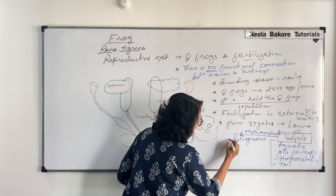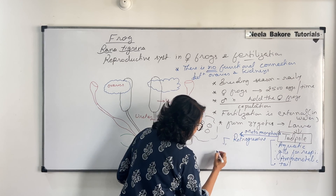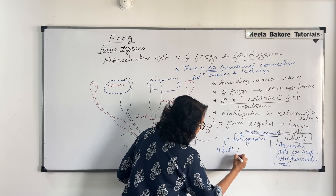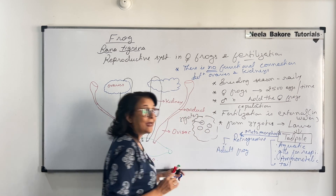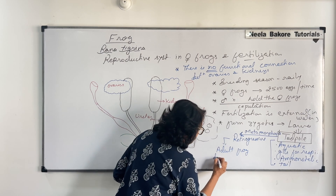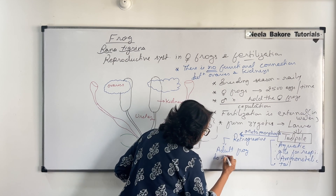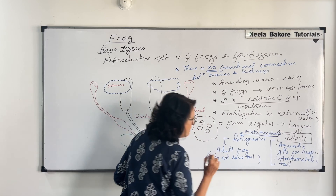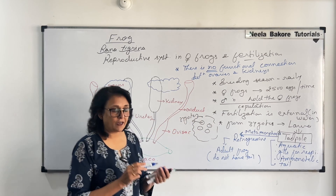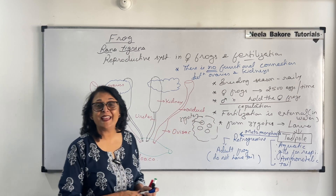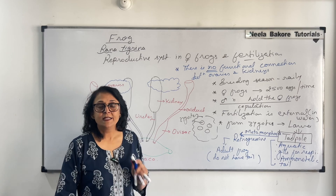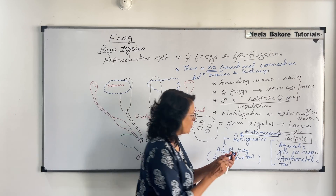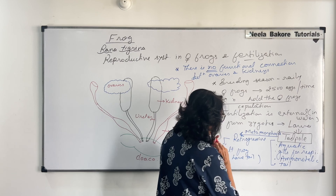After this retrogressive metamorphosis, we get the adult frog. Adult frogs do not have a tail. Since a very well-developed functional structure — the tail — is lost during this process, such a metamorphosis is called retrogressive metamorphosis. This is a very important term to remember.